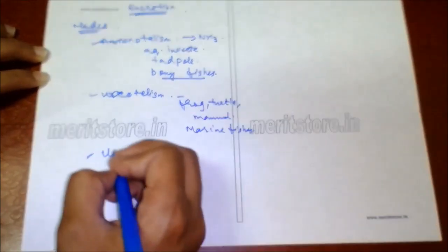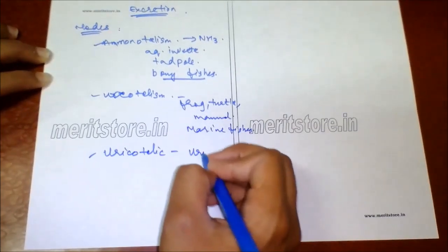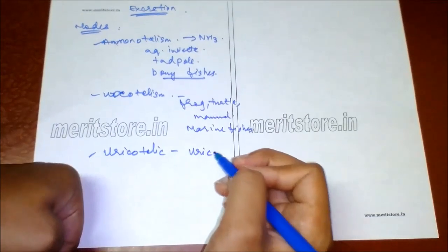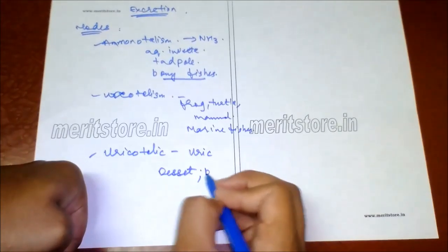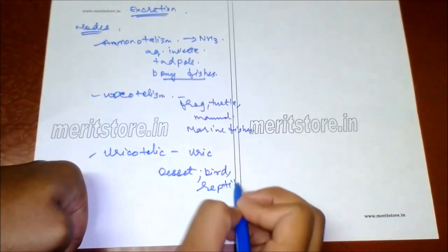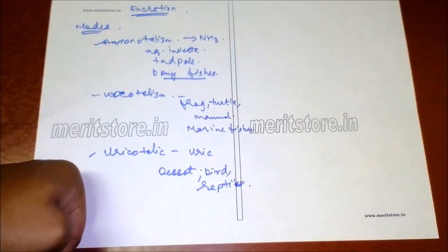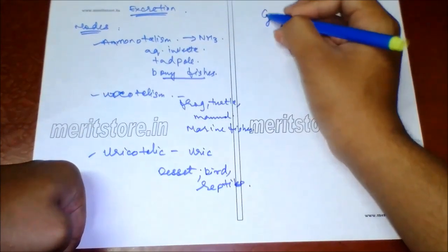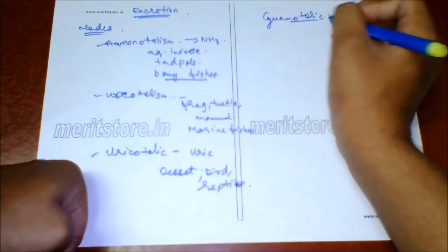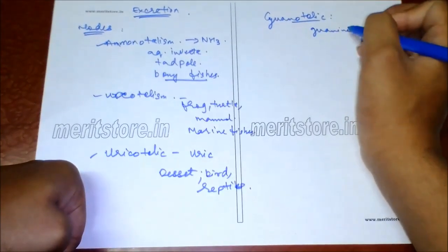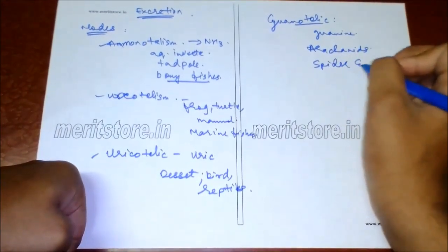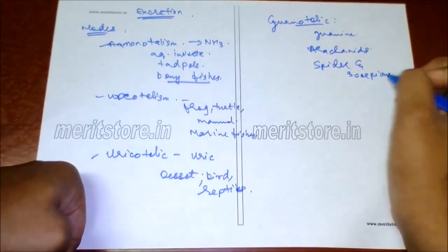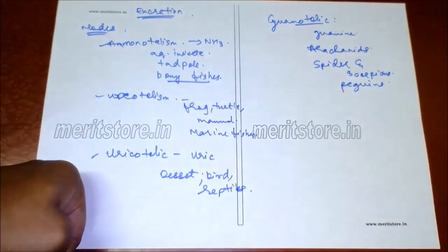Uricotelic animals excrete uric acid as their waste product; it is less toxic, a thick paste, and requires the least amount of water. It is seen in desert animals, birds, and reptiles. Guanotelic animals excrete the nitrogenous base guanine, seen in arachnids (spiders and scorpions) and penguins. Gout is a condition of painful arthritis due to defective metabolism and deposition of uric acid in the joints.